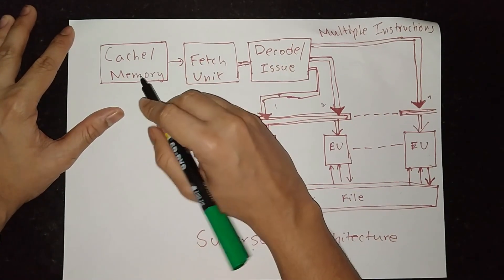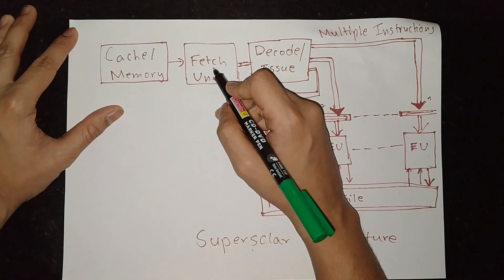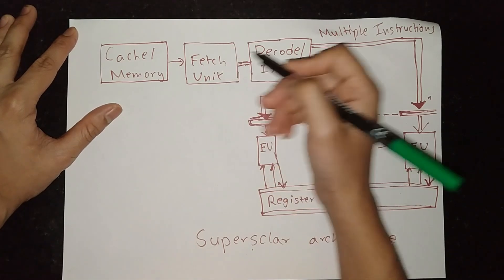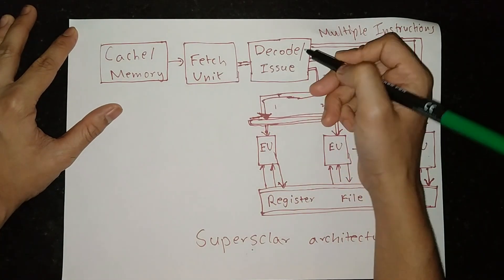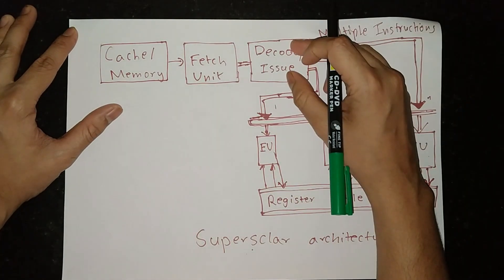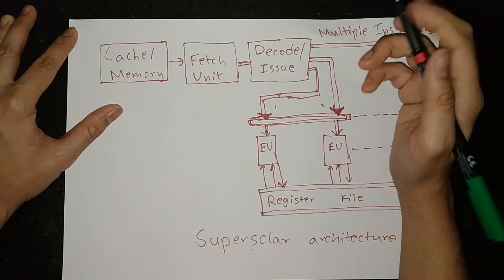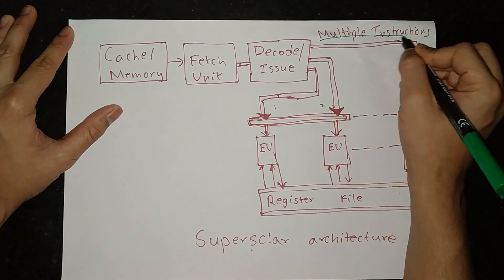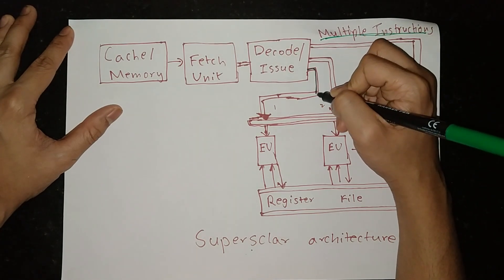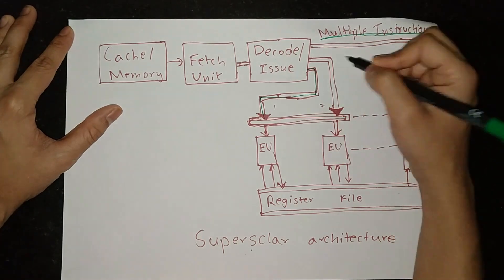Now we will understand the architecture. So I have to fetch my instruction here. And then I don't understand what I have to do, so I will decode. After decoding, then I will know what I want to do. So I have multiple instructions here. I have to send each instruction to an execution unit.